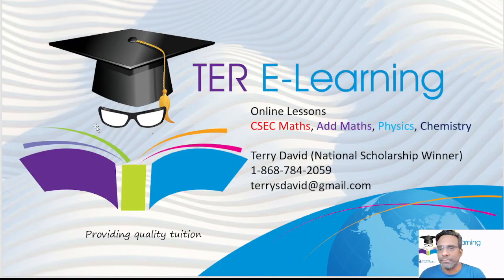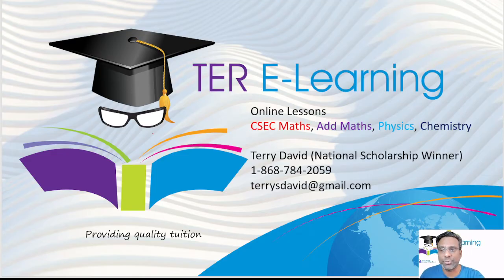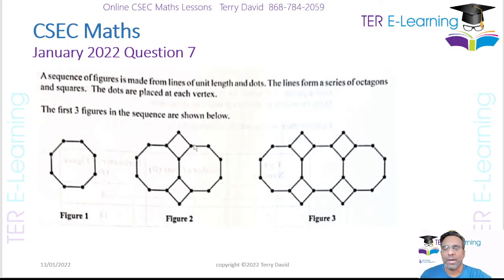Hi guys, Terry here again. I'm just working question 7 of the January 2022 paper. So this question is the investigation question. A sequence of figures is made from lines of unit length and dots. The lines form a series of octagons and squares. The dots are placed at each vertex. So they have the first three figures in the sequence.